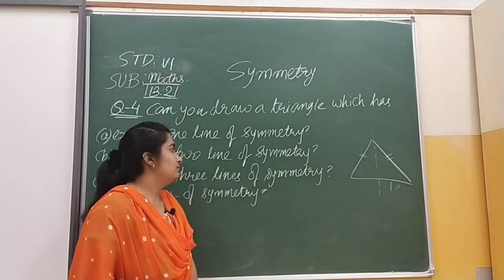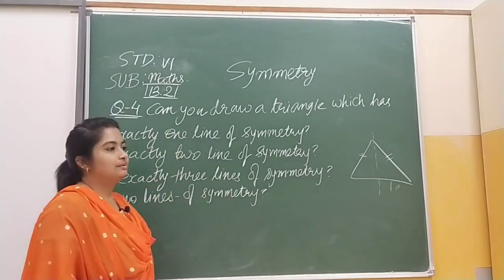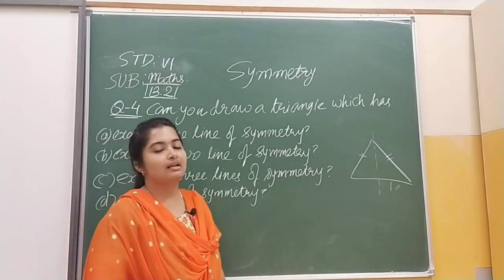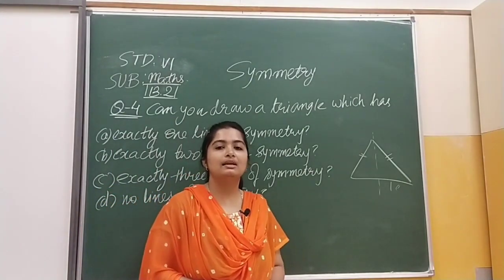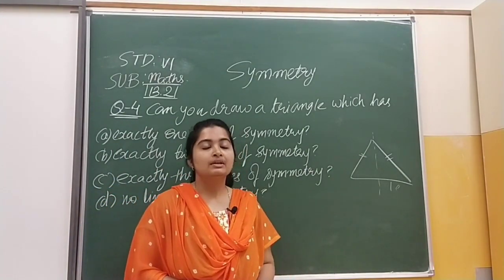Second one — we have given that exactly two lines of symmetry — that is not possible. Aisa triangle humhe nahi mil sakta jis mein exactly two lines of symmetry humhe mil sakay.